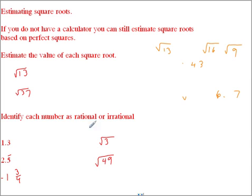So if you identify each number as rational or irrational, all you have to do to figure out if something is rational is say, does it end if it's a decimal, or does it continue to repeat if it's a decimal? If it ends, well, this is just 13 tenths.